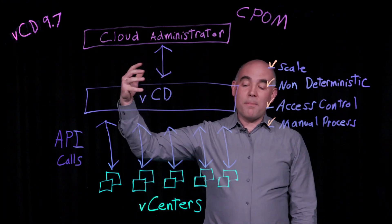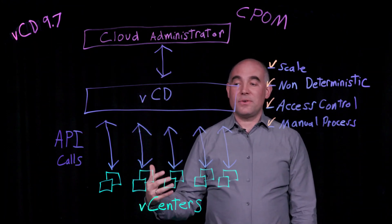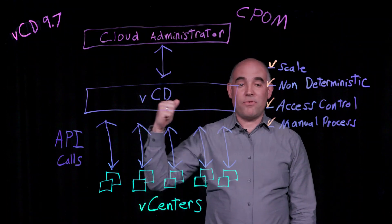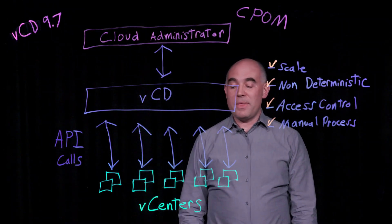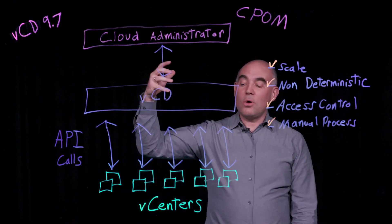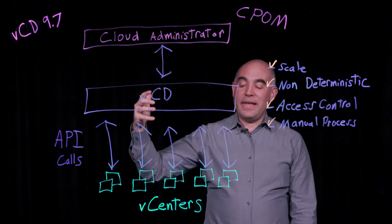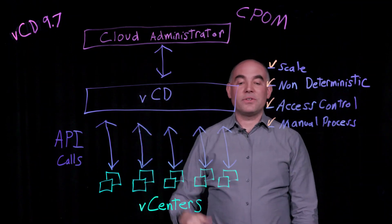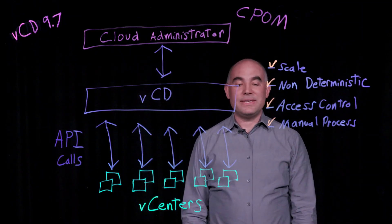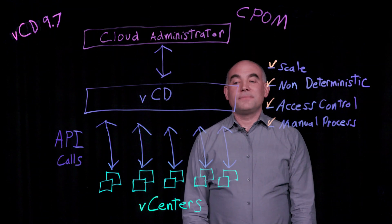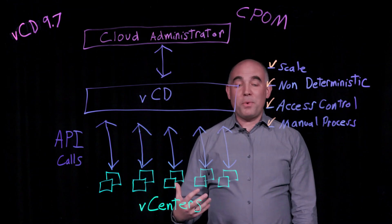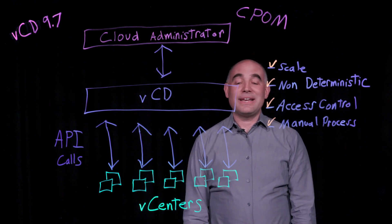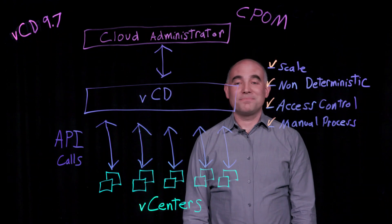He can now programmatically address all of the vCenters in his environment based on the information that he's received from that directory call, and he is no longer needing to individually address all of the vCenters because they're all being directed to VCD. That's pretty much what we have for you today related to VCD as an API endpoint. Thanks for watching.